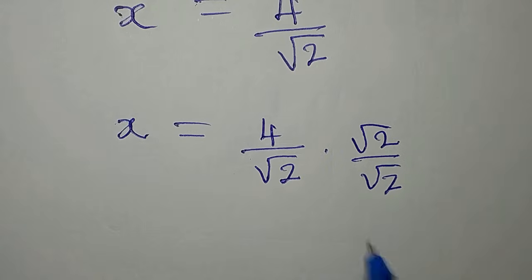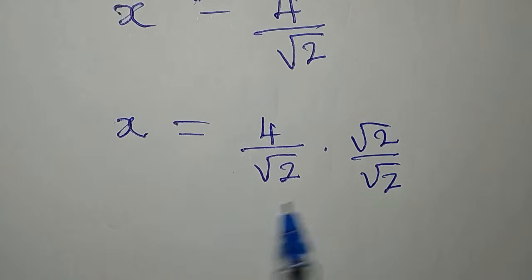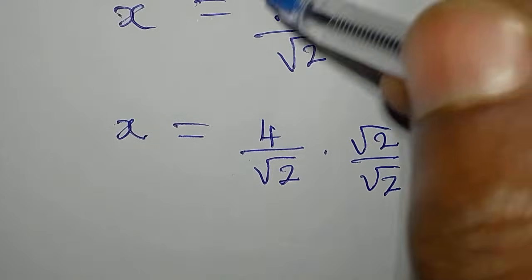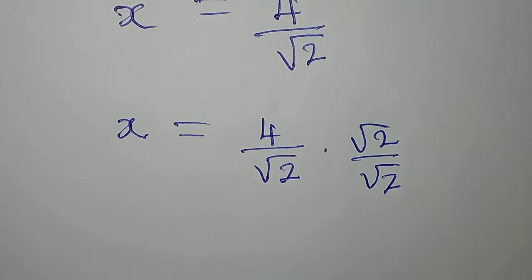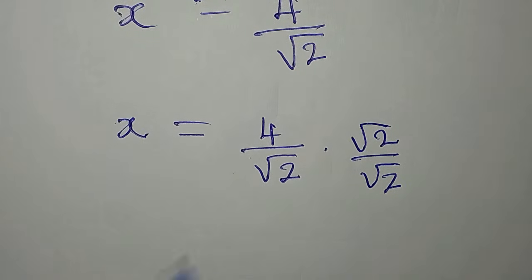Remember that root 2 over root 2 is 1. And 1 times this number, it will not change it from being equal to this, right? So, let's go.